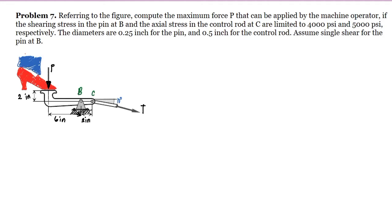Problem number 7: referring to the figure, compute the maximum force P that can be applied by the machine operator if the shearing stress in the pin at B and the axial stress in the control rod at C are limited to 4,000 PSI and 5,000 PSI respectively. The diameters are 0.25 inch for the pin and 0.5 inch for the control rod. Assume single shear for the pin at B.